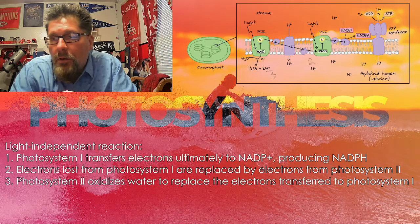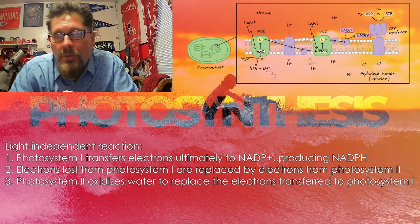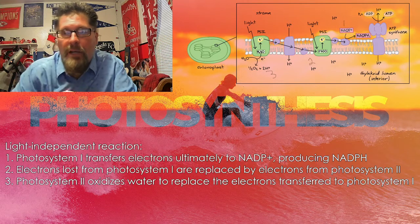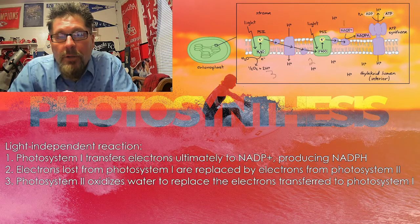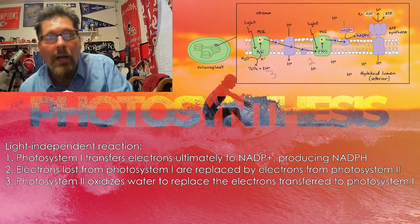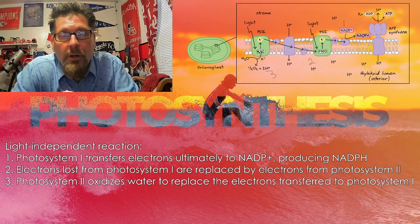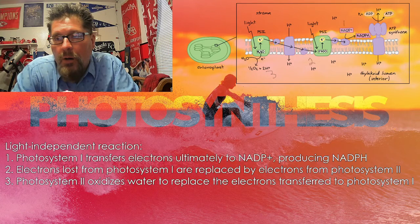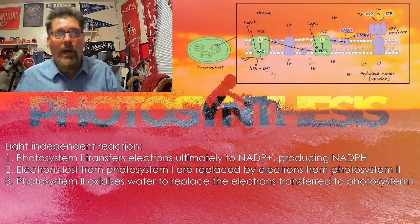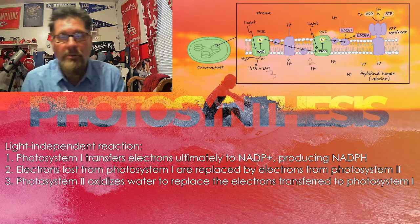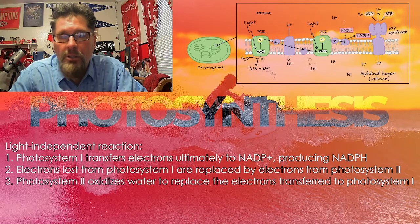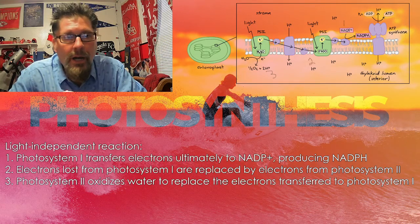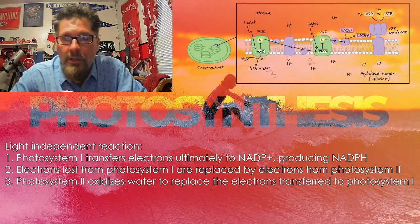Photosystem one's electron, once it leaves, is going to be accepted by NADP. The electron is connected to a hydrogen — that's where the H in NADPH comes from. That NADPH is going to travel to the Calvin cycle, and that H is going to be part of building the glucose molecule. Since each NADP provides one H, and you know the glucose structural formula, we're going to need 12 of those headed to the Calvin cycle — photosystem one will be cranking them out as long as the sun is shining.